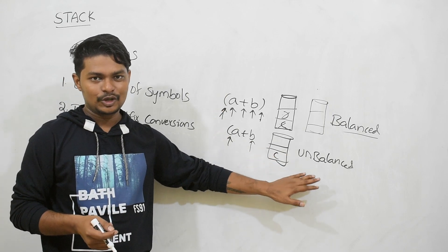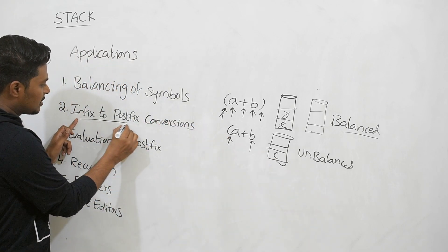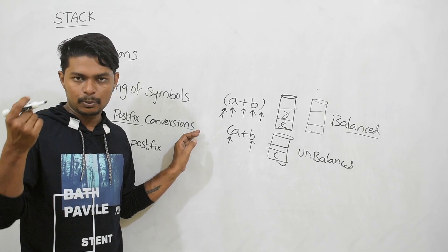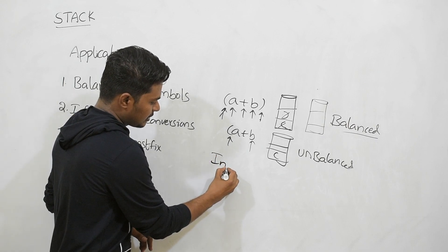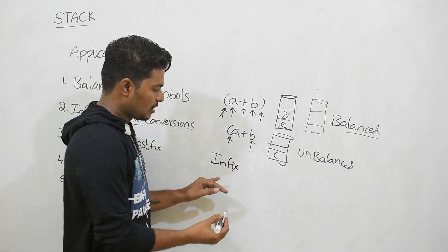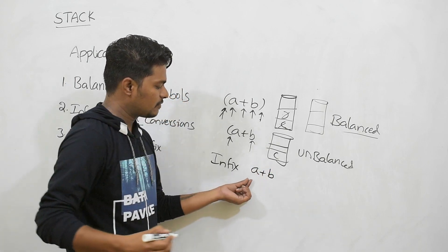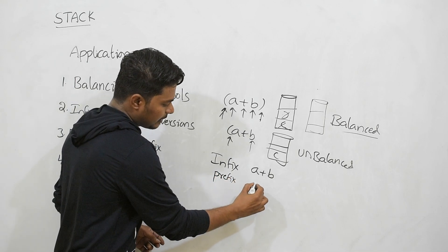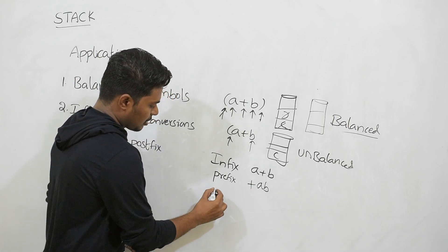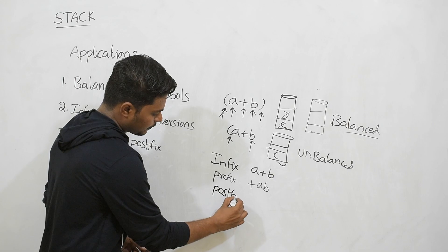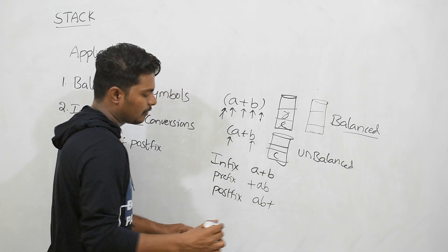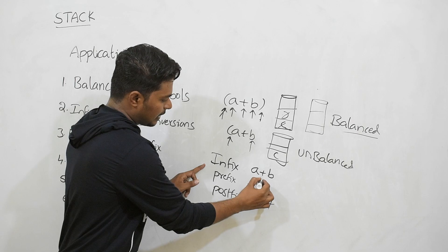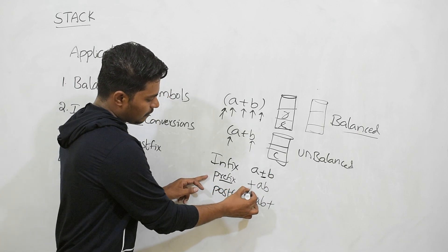Now coming to the second example: infix to postfix conversion. We have three kinds of expressions — infix, prefix, and postfix. In an infix expression, the operator is in the middle with operands on both sides. In a prefix expression, the operator is at the beginning. In a postfix expression, the operator is at the end.